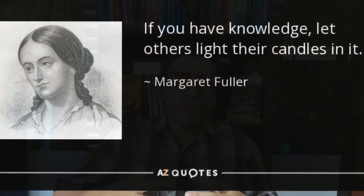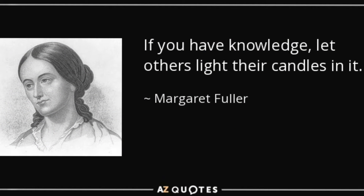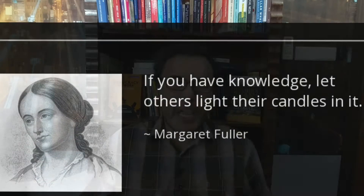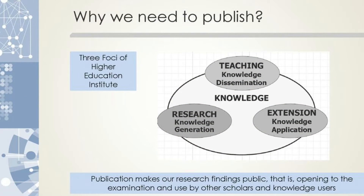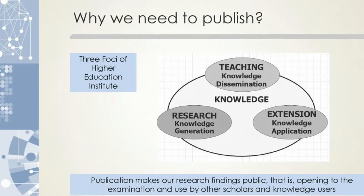Why do you want to publish your article with this indexed journal? The best reason is you want to share your knowledge and your findings in your research. The best way to share your knowledge and findings is to publish with ISI and Scopus indexed journals. Many universities around the world now put a criteria requiring publication in these indexed journals.